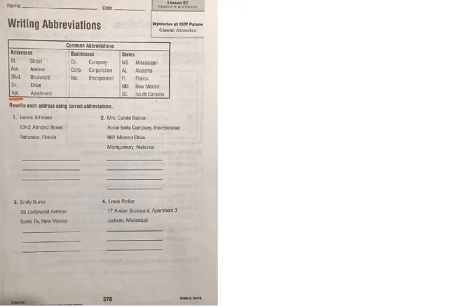You'll notice that address abbreviations — street, avenue, boulevard, drive, apartment — are all followed by a period. When talking about businesses, companies, corporations, or incorporated, those are also followed by a period. And again, states, like we discussed yesterday, are not followed by a period.